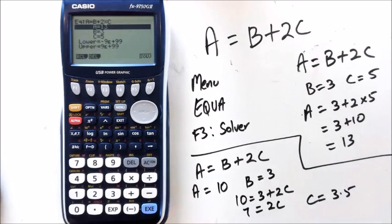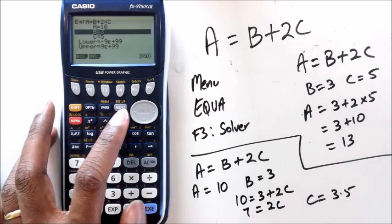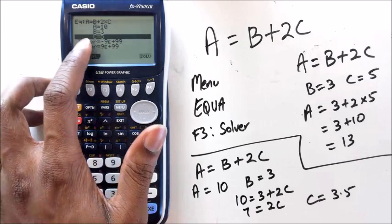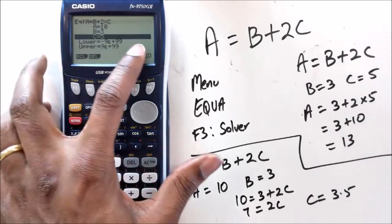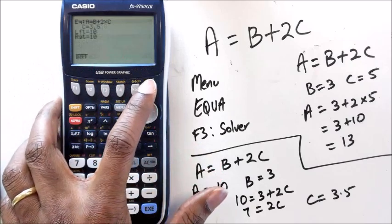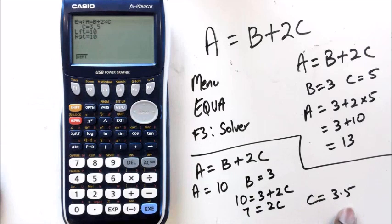Okay, so let's see. So to do that, I go into A, I change it to 10. B, I change it to 3. Well, it's already at 3. Now you'll see that C is actually at 5. But that's what we're trying to figure out. So we're going to go into Solve, press Solve, and as you can see, we get C equals 3.5, which is what we got here.